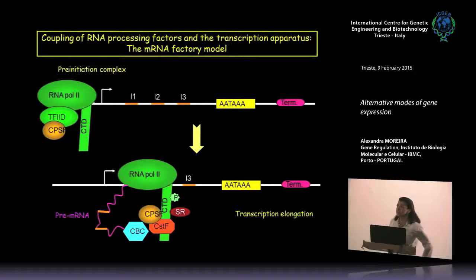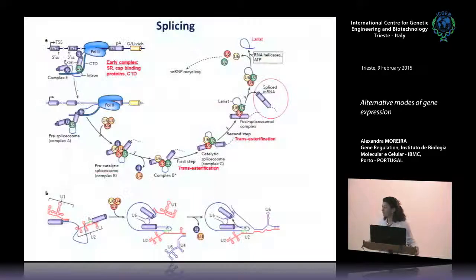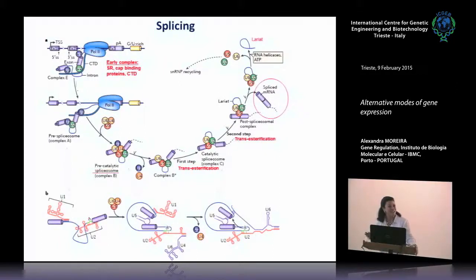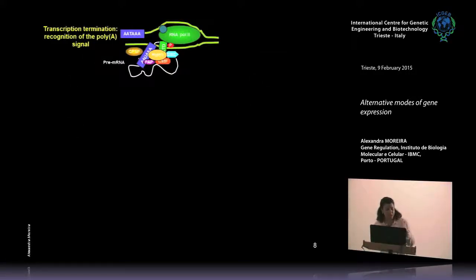During transcription, immediately after initiation, capping occurs through capping complex proteins recruited to the five-prime end, adding a cap that protects the mRNA from five-prime to three-prime degradation. Splicing also occurs during transcription and elongation, requiring several elements present at the boundaries between introns and exons, along with the assembly of core splicing factors U1, U2, U4, U5, and U6, which excise the introns and ligate the two flanking exons. For what happens at the end of the gene, RNA Pol2 must know exactly where to stop when transcribing a transcriptional unit.